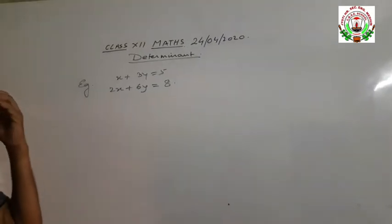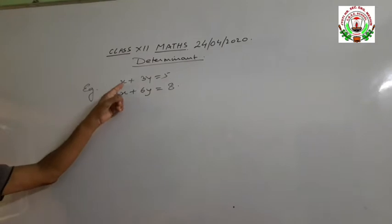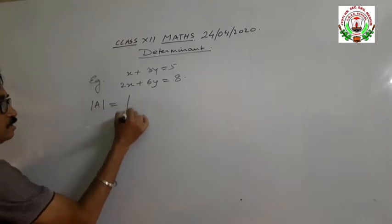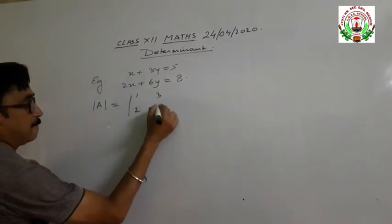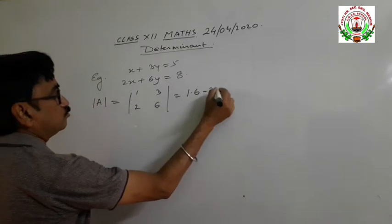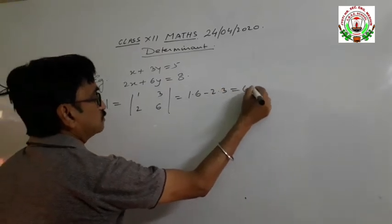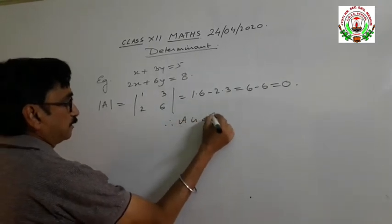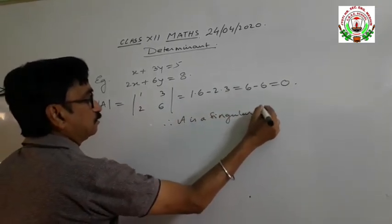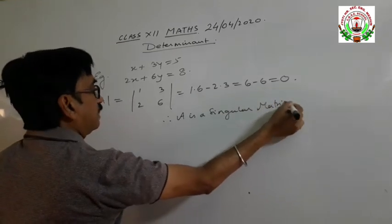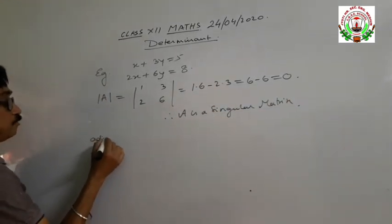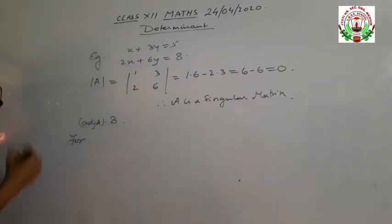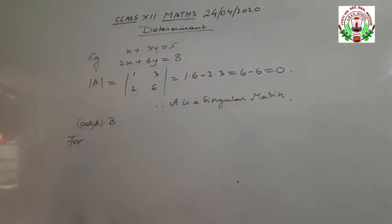Now let us take the example: x plus 3y equals 5, and 2x plus 6y equals 8. Here the determinant value of A is 1 into 6 minus 2 into 3, which equals 6 minus 6, equal to 0. So A is a singular matrix, and now we have to calculate adjoint of A into B. For this, first we have to find out the cofactors for calculating the adjoint.